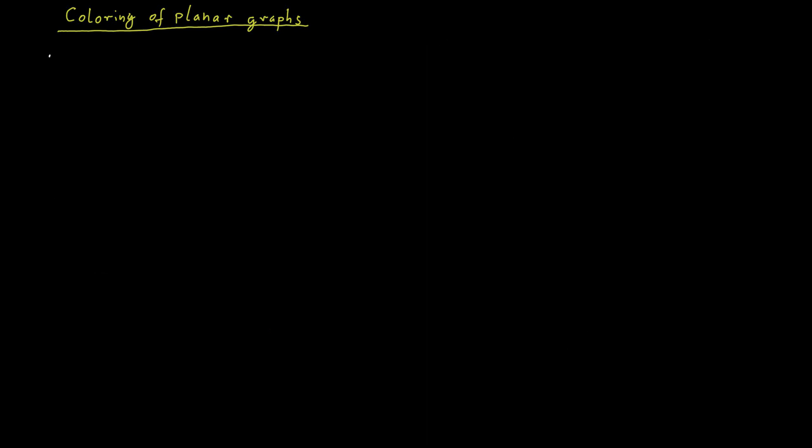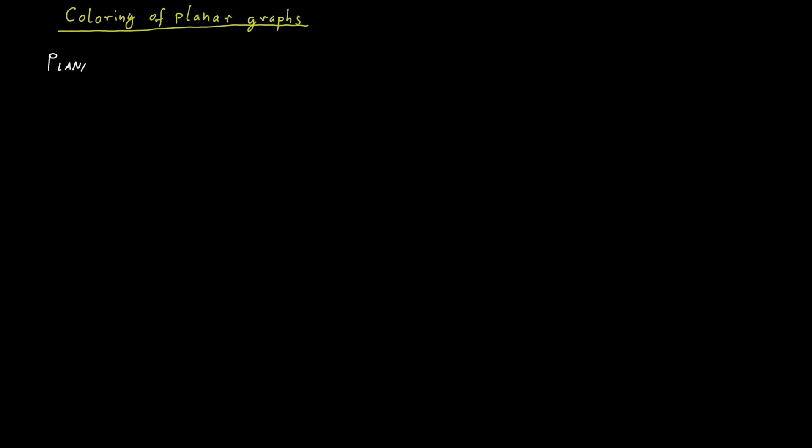Consider the following three problems. Planar two coloring. So is it possible to color a planar graph using only two colors? Planar three coloring and planar four coloring. So is it possible to color a planar graph using only four colors?